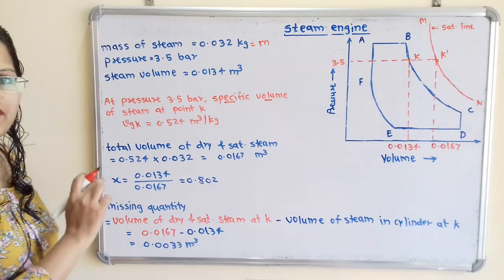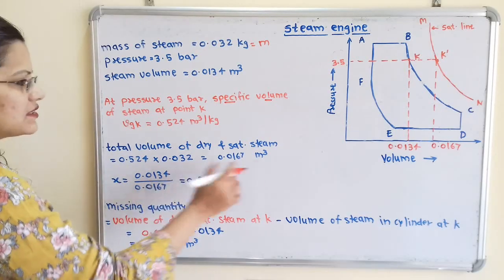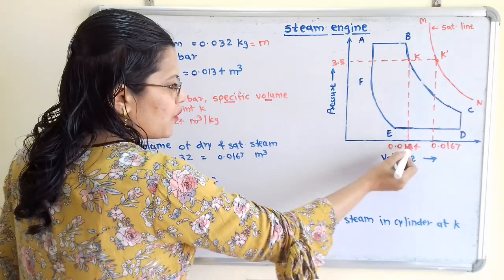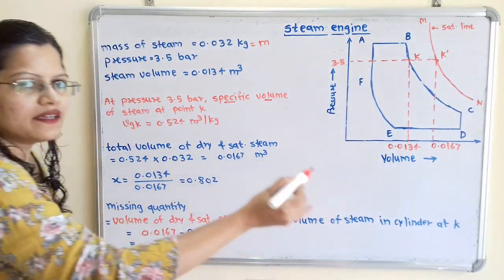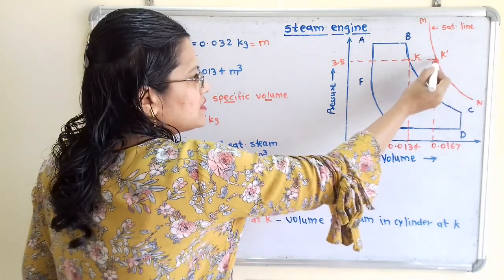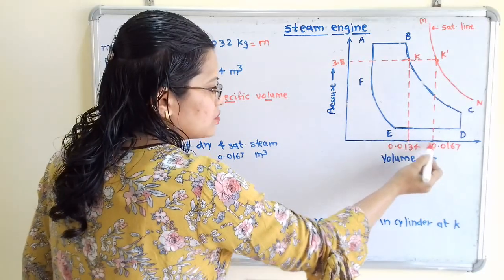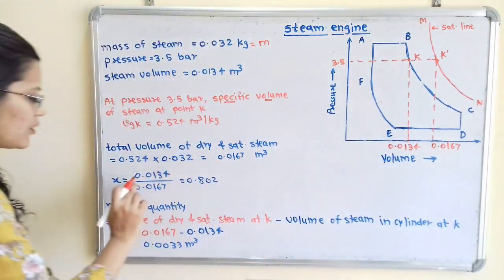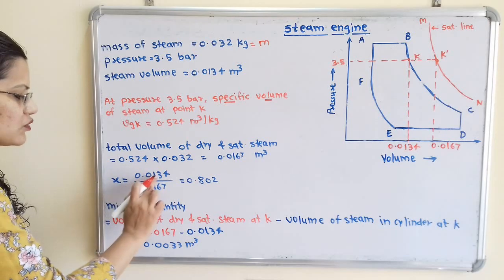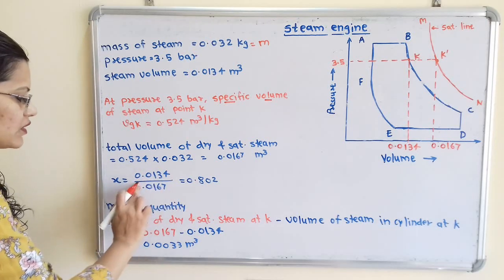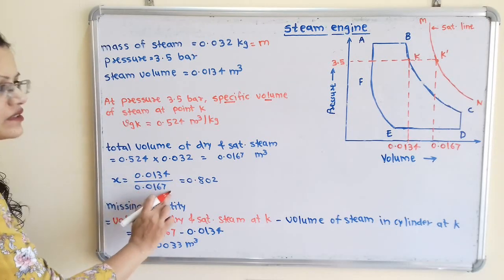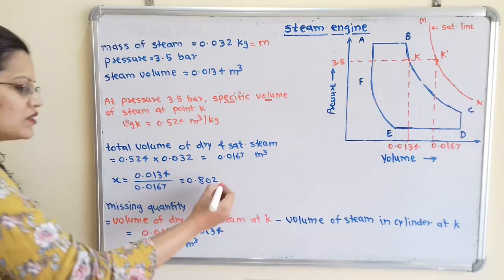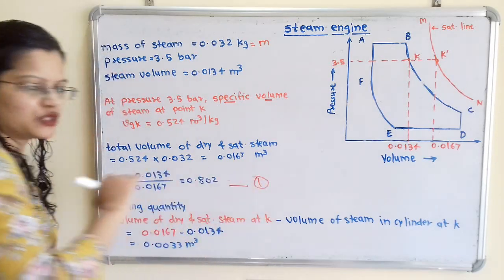Now it is easy to calculate the dryness fraction. x equals the volume at point K divided by the volume when steam is dry: 0.0134 divided by 0.0167, which equals 0.802. This is the answer to the first question.